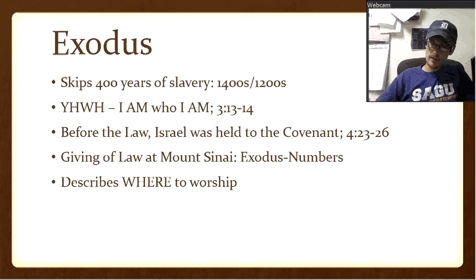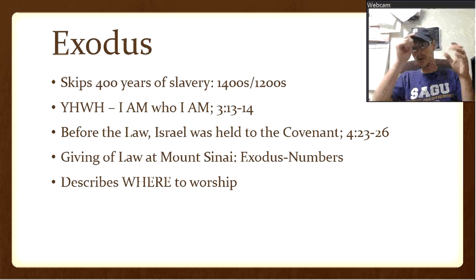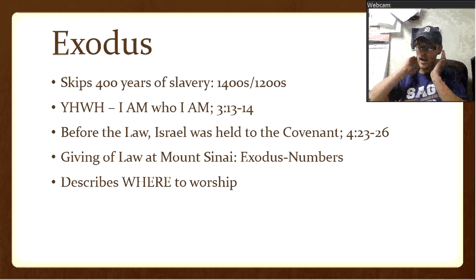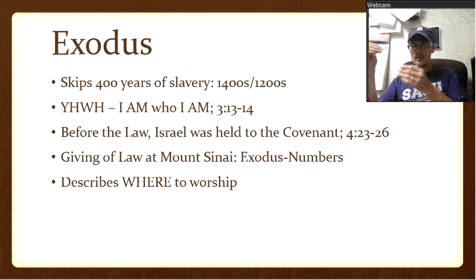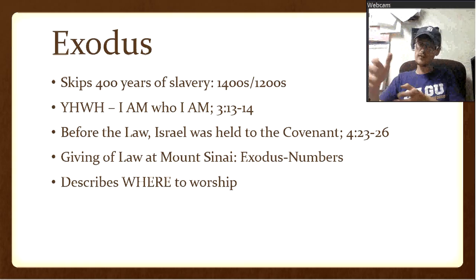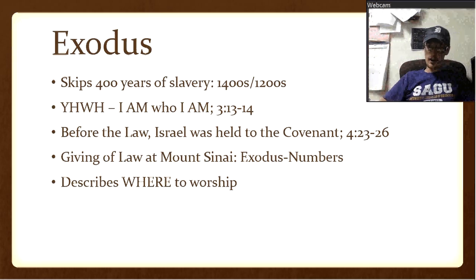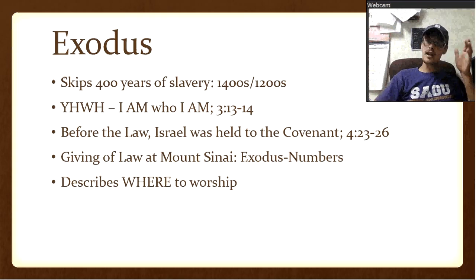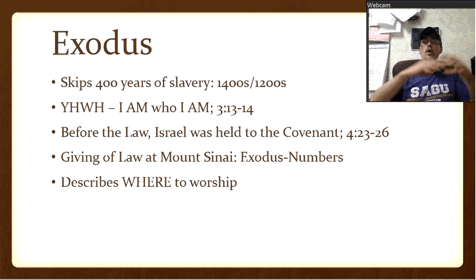Exodus has Israel freed from the land of Egypt. They cross the sea and get down to a place called Mount Sinai where God gives the law through Moses to the people. The law is given through the last portion of Exodus, through Leviticus, and through the first half of Numbers. Exodus in theme answers the question of where to worship — it talks about the tabernacle.